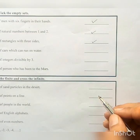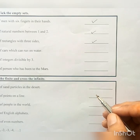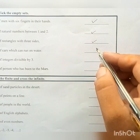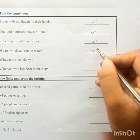Set of car which can run on waters. So the cars which can run on waters. There are no cars which can run on waters. So this is also an empty set.